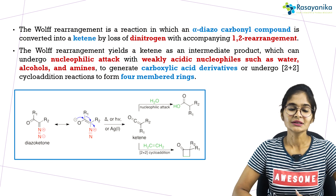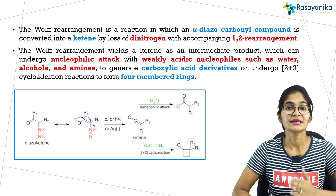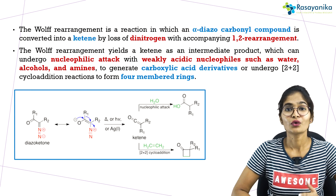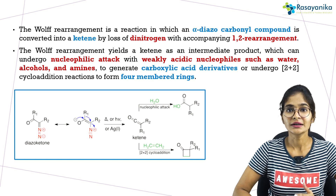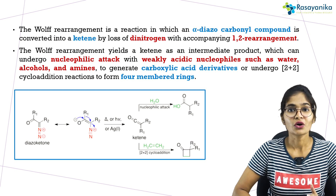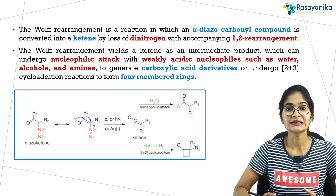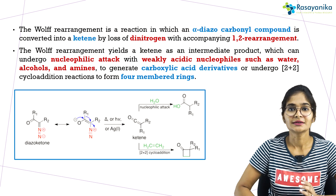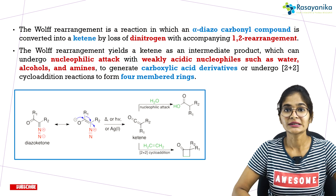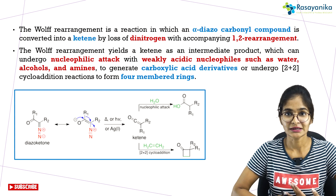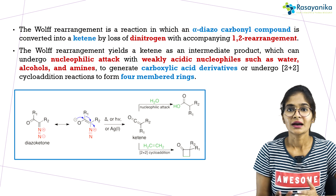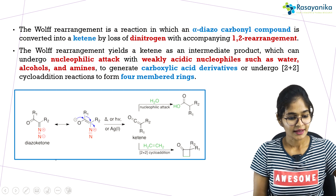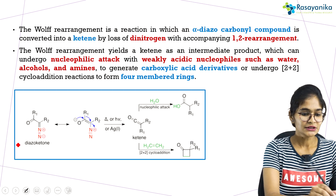In organic chemistry there are so many rearrangement reactions, and every rearrangement reaction has its own peculiarity. Similarly, in the case of the Wolff rearrangement reaction, we are starting with alpha diazocarbonyl compounds. The conversion of alpha diazocarbonyl compounds to a ketene intermediate is called the Wolff rearrangement reaction. Further, the formed ketene will undergo reaction to give carboxylic acid, ester, or amide derivatives upon treatment with weak acidic nucleophiles like alcohols or amines.